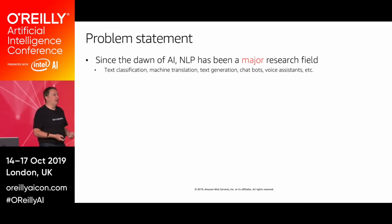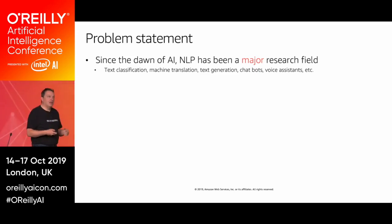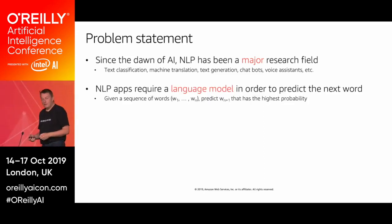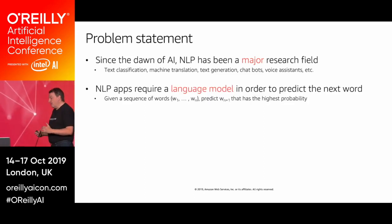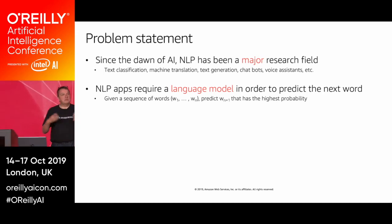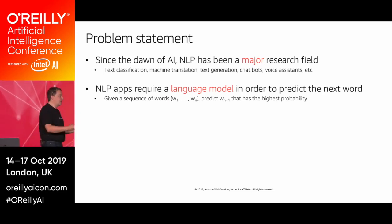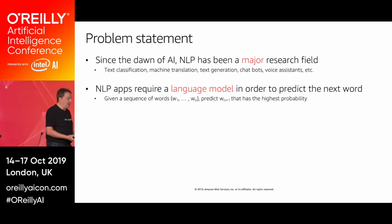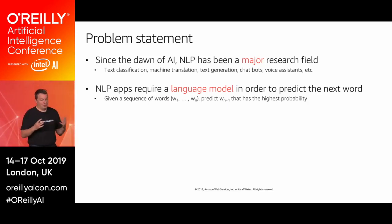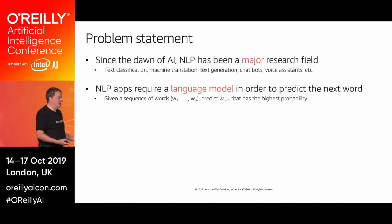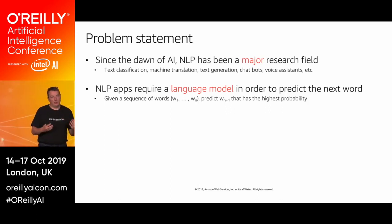If we think we can build AI systems, we have to think about how we integrate speech and voice. The problem is that text, characters, and strings are meaningless to computer systems. We need numbers, we need vectors, we need matrices. So we need to build a language model that lets us predict what the next word should be, given a sequence of words.